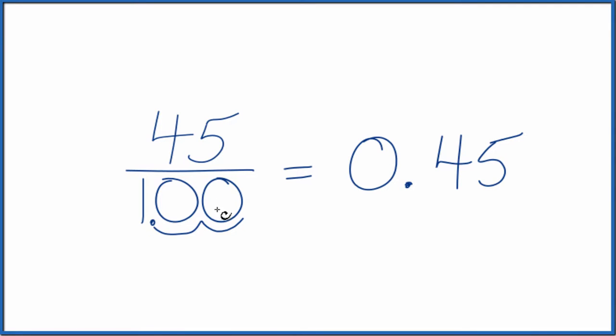That gives us 1.00, just one. But we also have to do that to the numerator. So let's move one, two. Now we have 0.45 over one. You could put a zero in front if you wanted. So 0.45 over one, that's just 0.45.